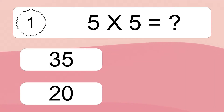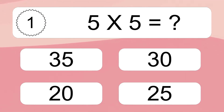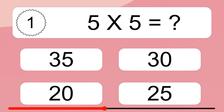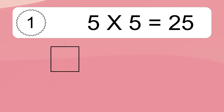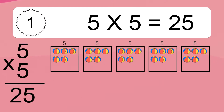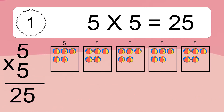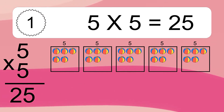5 times 5 equals what? 5 times 5 equals 25. We have 5 boxes, and each box has 5 colorful balls inside. If you count all the balls in all the boxes together, you will have 5 times 5 balls. This equals 25 balls.